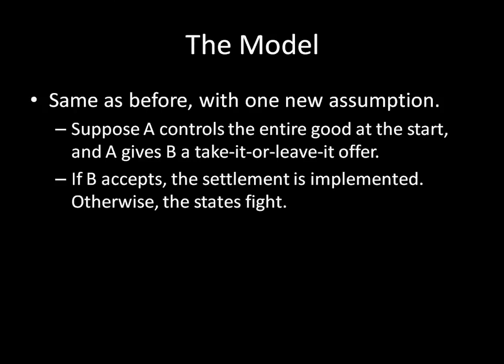We're going to assume that A controls the entire good at the start and is going to give B a take-it-or-leave-it offer. So in the context of the geometric model that we talked about in the last video, where the states were bargaining over a strip of territory, you can imagine this as though A controls all of that land to start. And so A is just going to move back away from its border with B and say, all right B, we're going to demand to keep all of this, but we're going to give you the rest of this. And you can either accept that and take over that territory, or you can start a war and try to get more territory from us. It's your choice.